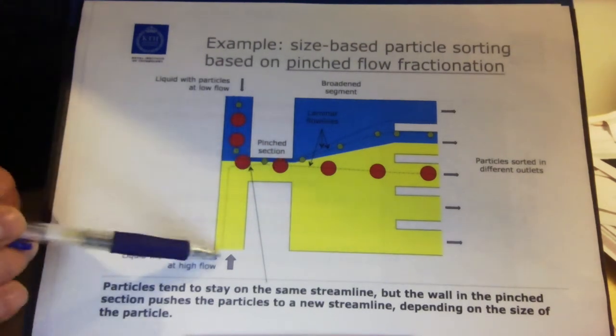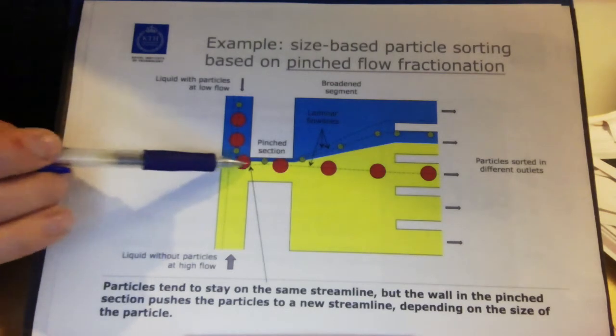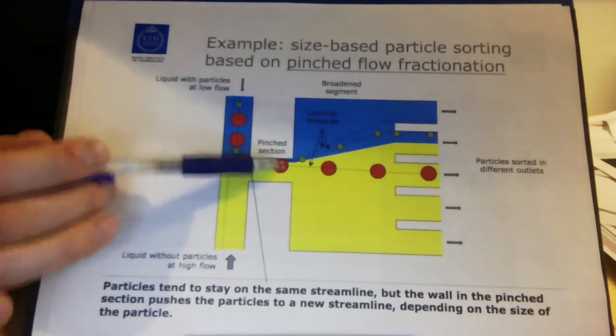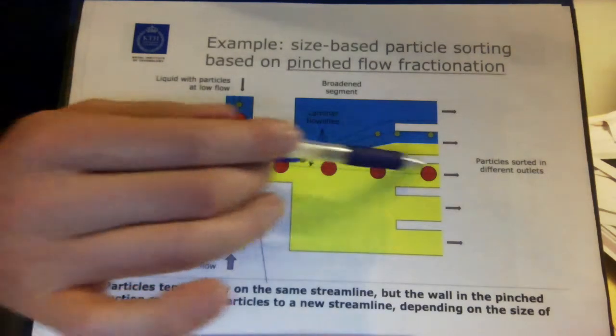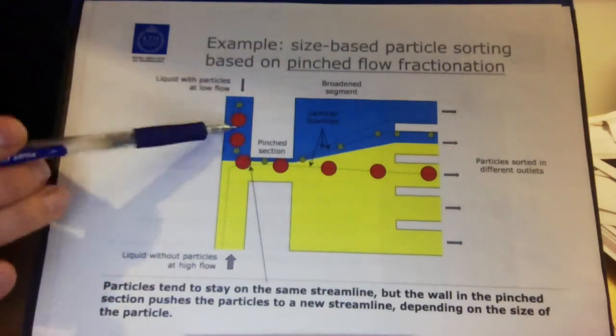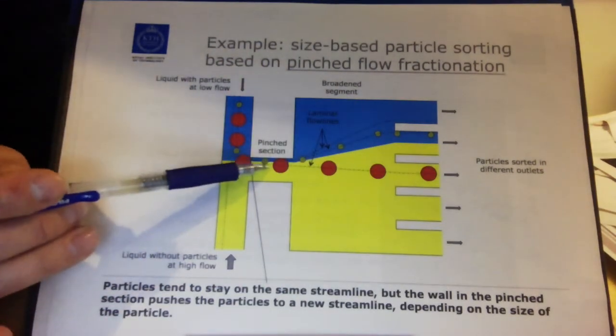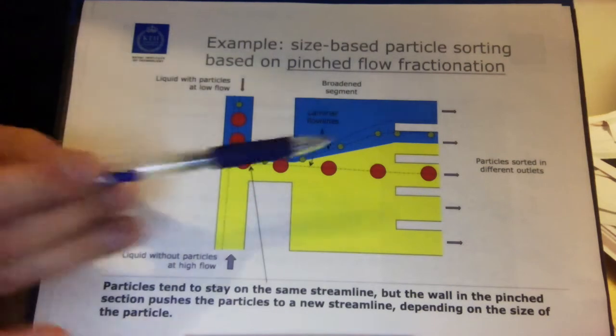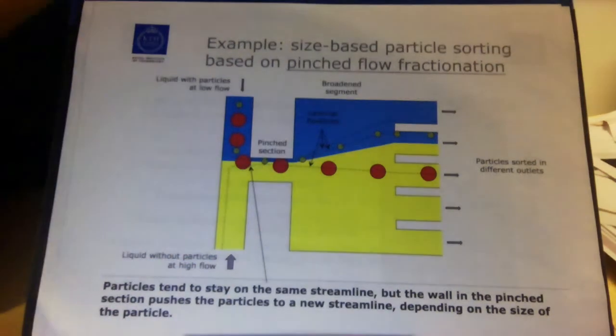And where this line comes from, this is actually a streamline that was originally in the yellow liquid. So I see that my red bullet is now pushed into the yellow liquid and is forced on this streamline. So I see that depending on the size of my particles, they will be pushed further and further away from the wall and they will end up on different streamlines totally dependent on their size.